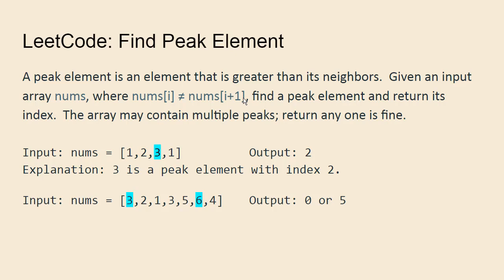Without this condition, the peak element may not exist. If all the array contains the same element, then there isn't a peak element. Given this, you are asked to find a peak element and return its index. The array may contain multiple peaks; returning anyone is okay.